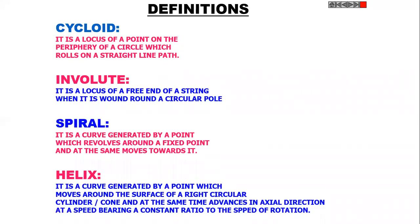So, definitions of the cycloid, involute, spiral, and helix. First of all, cycloid: it is a locus of a point on the periphery of a circle which rolls on a straight line path. It is called a cycloid.